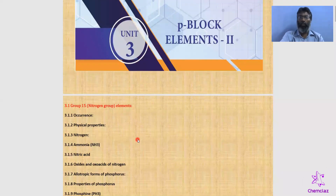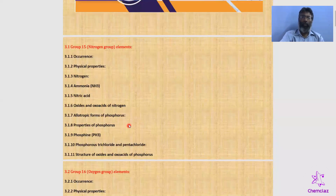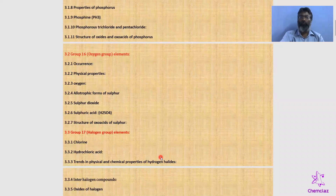In Group 15, the nitrogen group, we will cover occurrence, physical properties, and then nitrogen and phosphorus specifically. For nitrogen, we'll discuss compounds like ammonia and nitric acid, and the oxides and oxy acids of nitrogen — structure only. For phosphorus, we'll cover allotropic forms, properties, and compounds including phosphine, phosphorus trichloride, phosphorus pentachloride, and oxides and oxy acids (structure only).